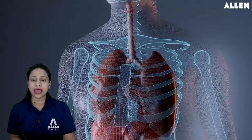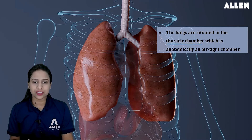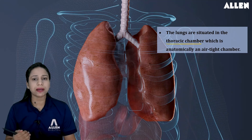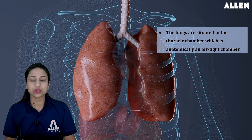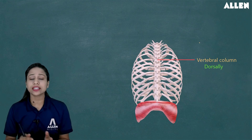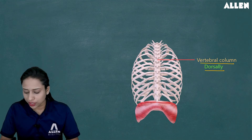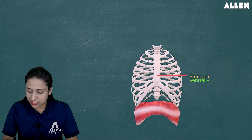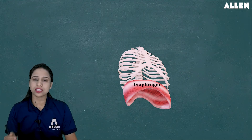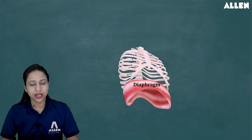The lungs are situated in an airtight thoracic chamber. There is no leakage of air of any kind. The thoracic chamber is covered on four sides: the dorsal side by the vertebral column, the ventral side by the sternum, the lateral sides by the ribs, the lower side by the muscular diaphragm, and the anterior side by the neck and clavicle bone.